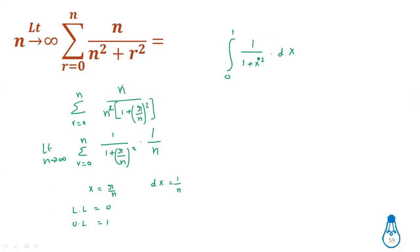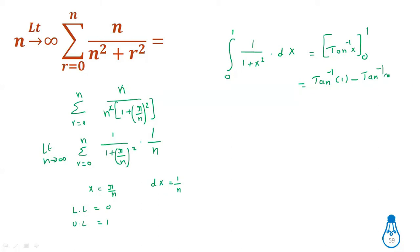Using the standard formula: integration of 1/(1+x²) dx equals tan inverse of x, with limits 0 to 1. Substituting limits: tan inverse(1) minus tan inverse(0). Tan inverse(1) equals π/4, and tan inverse(0) equals 0. So the final answer is π/4.